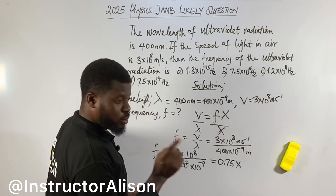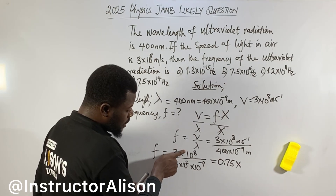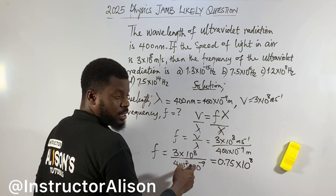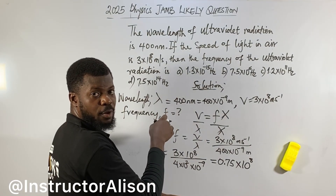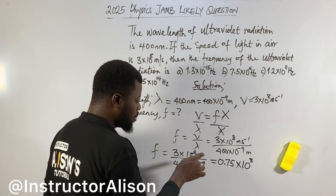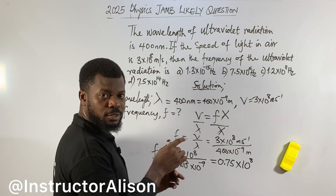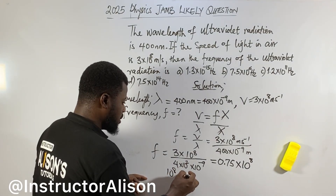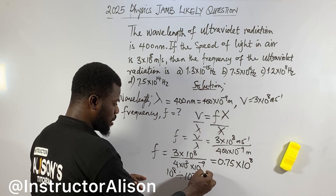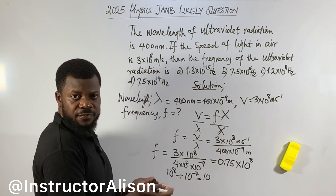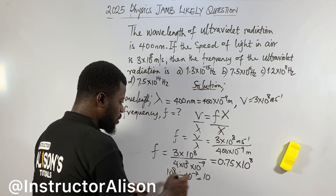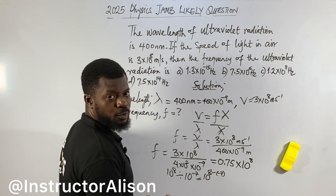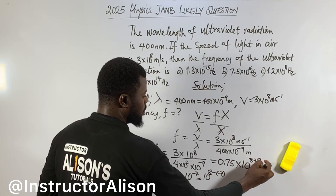So now you have 10 to the power of 8 on top, and 10 to the power of minus 7 on the bottom. Take one of the tens since they are common — now it's division. When dividing same base numbers, subtract the powers. So it's 8 minus (minus 7). Minus minus gives plus, so 8 plus 7 gives 15. So you get 10 to the power of 15. And 0.75 times 10 to the power of 15.